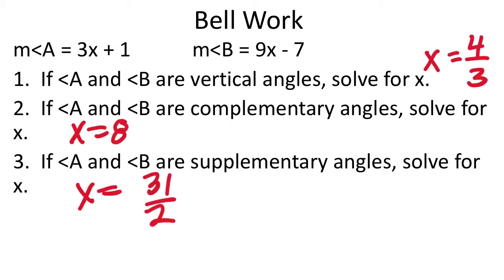All right, there's those three answers right there. Remember these three relationships as well. Vertical angles means the two are the same, so you'd equate the two expressions and then solve for x. Complementary is when the two add up to 90 degrees, so you'd take 3x plus 1, add 9x minus 7, and that equals 90 degrees, then solve for x.